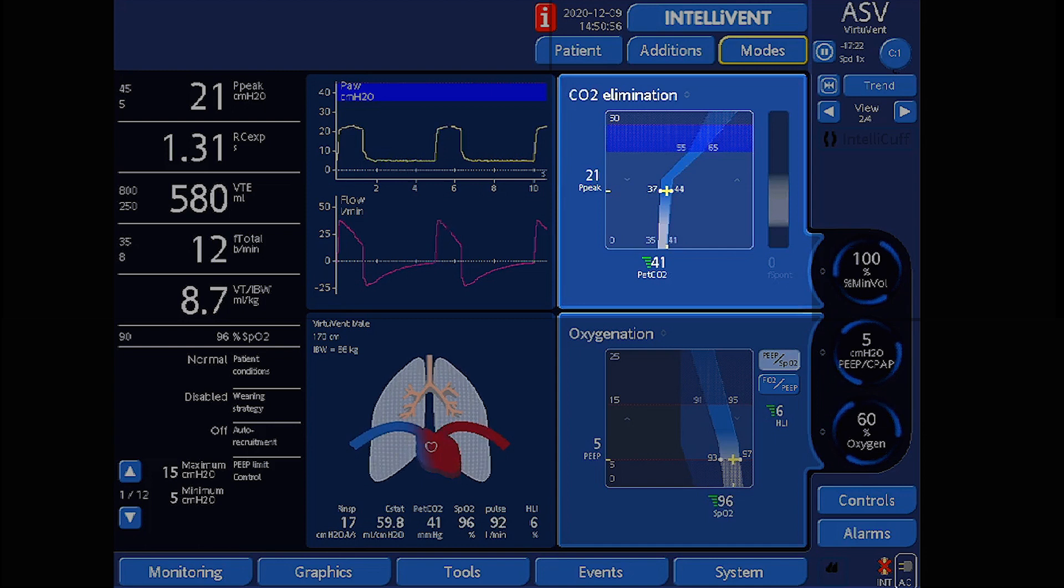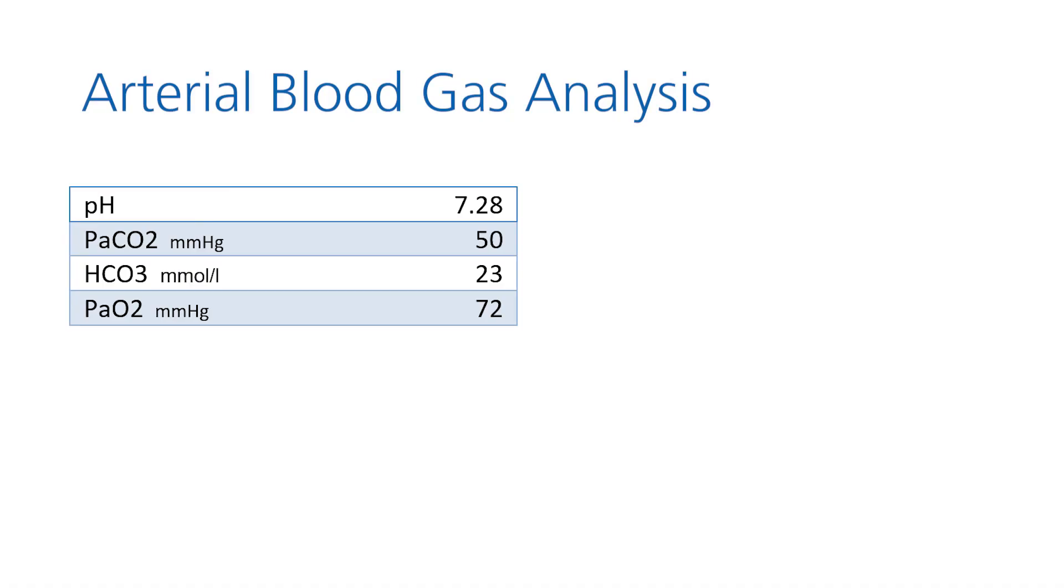30 minutes after starting ventilation with IntelliVent ASV, the patient's PET CO2 value, which is indicated by the small yellow cross, is now in the middle of the target range at 41 mmHg. A blood gas analysis taken at this point results in the values shown here.